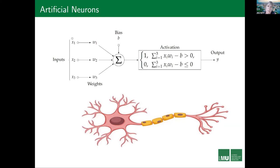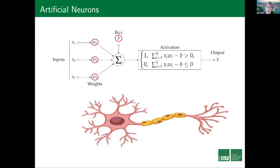So how to mimic that? We have signals X1, X2, X3 and so on — real-valued ones — and we have weights which mimic the amplification. What arrives is X1·W1, X2·W2, and so on. Everything is collected and summed up, and compared to a bias. Depending on whether the sum is larger or smaller than the bias, the neuron outputs a 1 or a 0. What we will later learn are these weights and the bias — these are the parameters of the neural network.